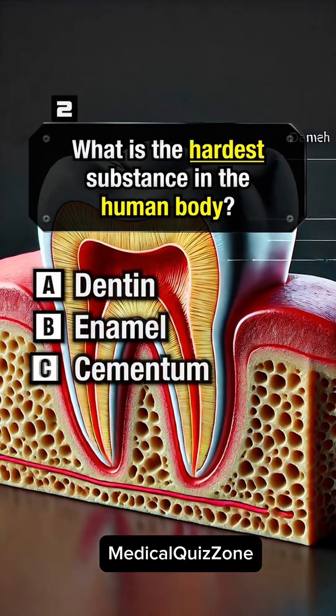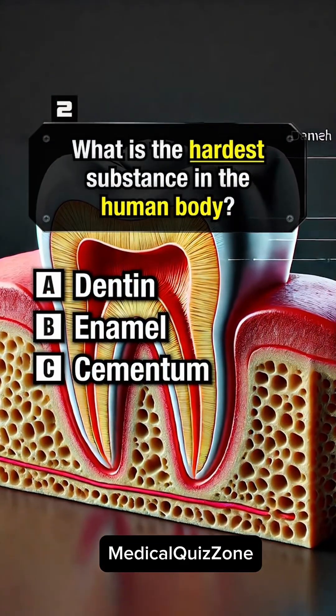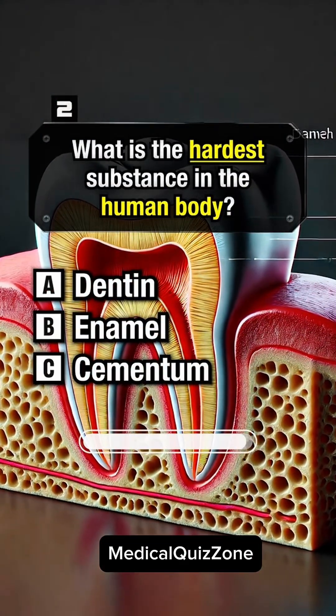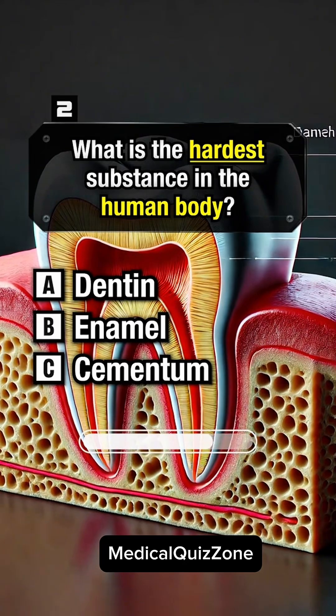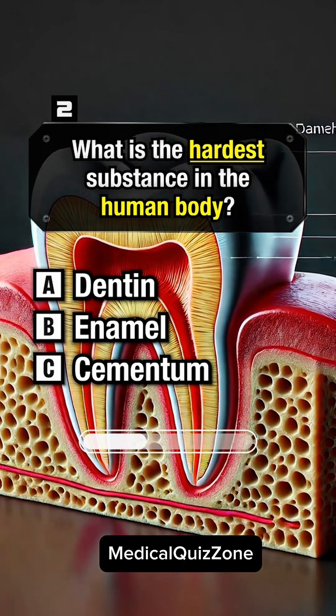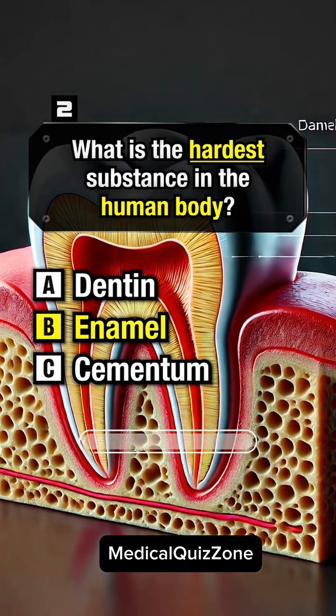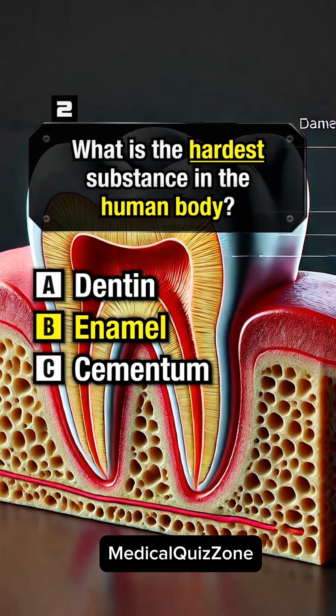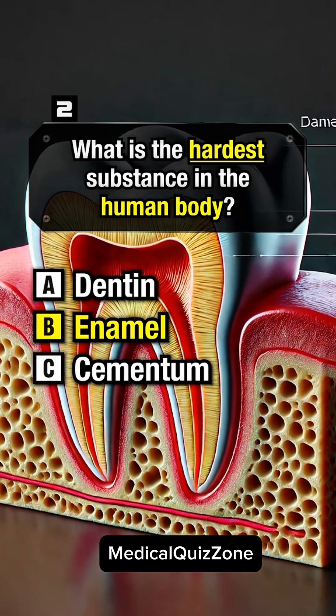What is the hardest substance in the human body? Answer B: Enamel.